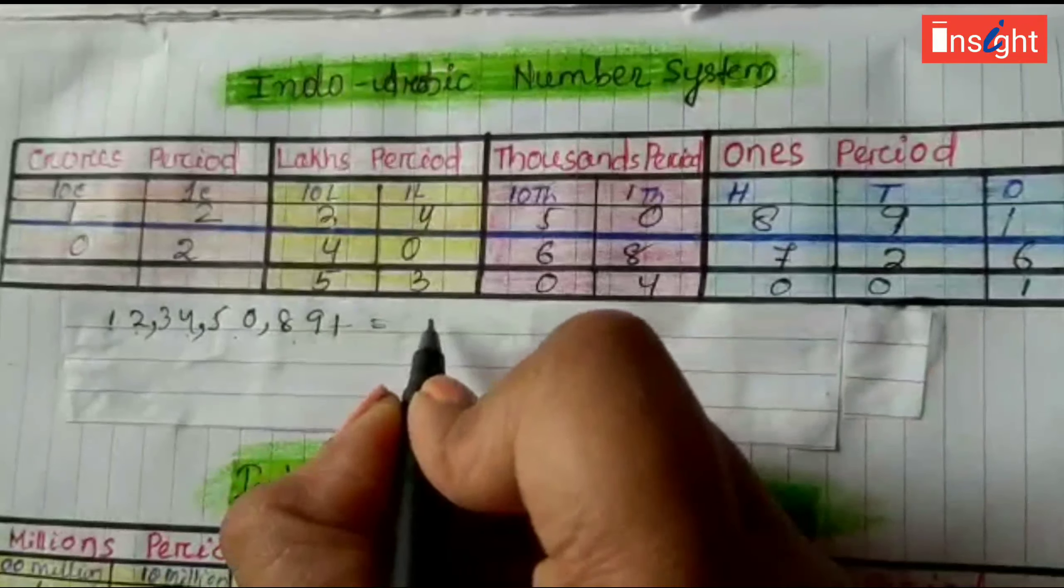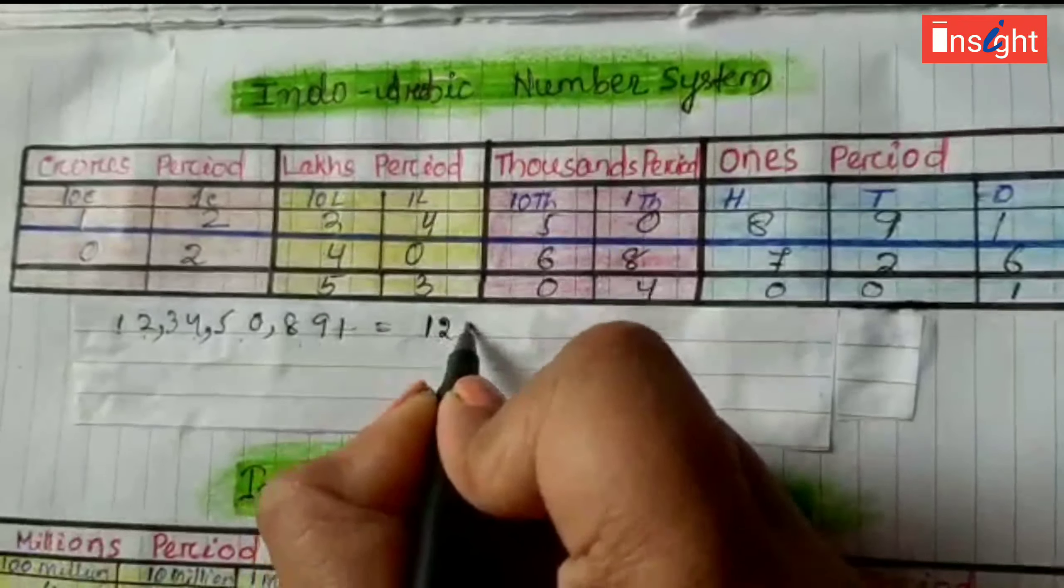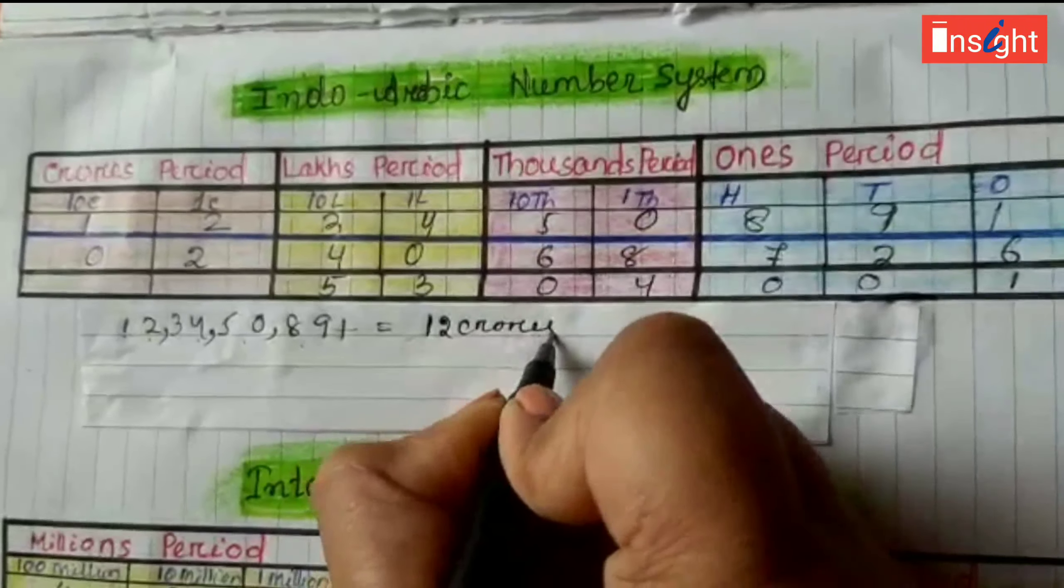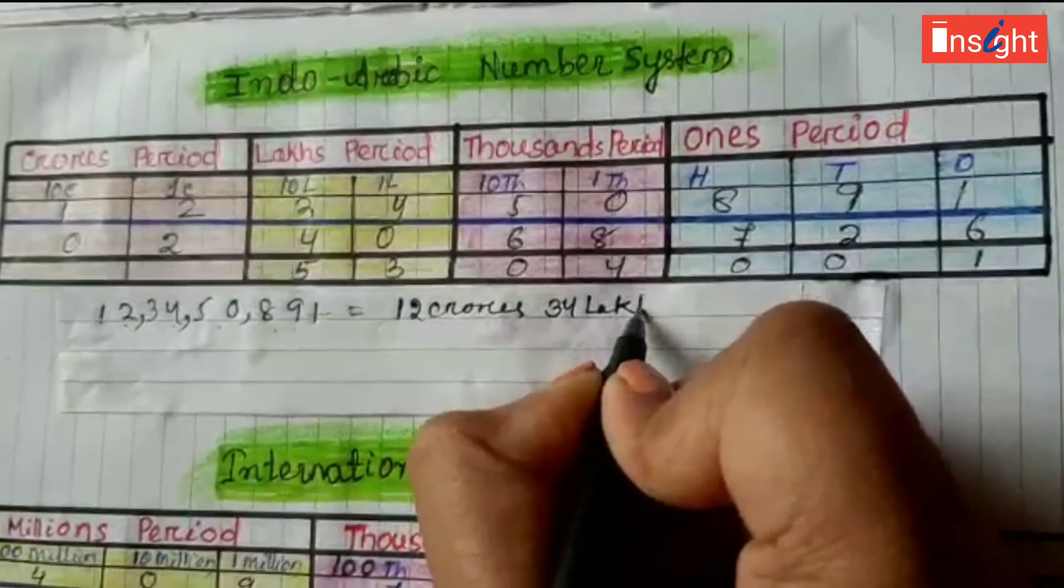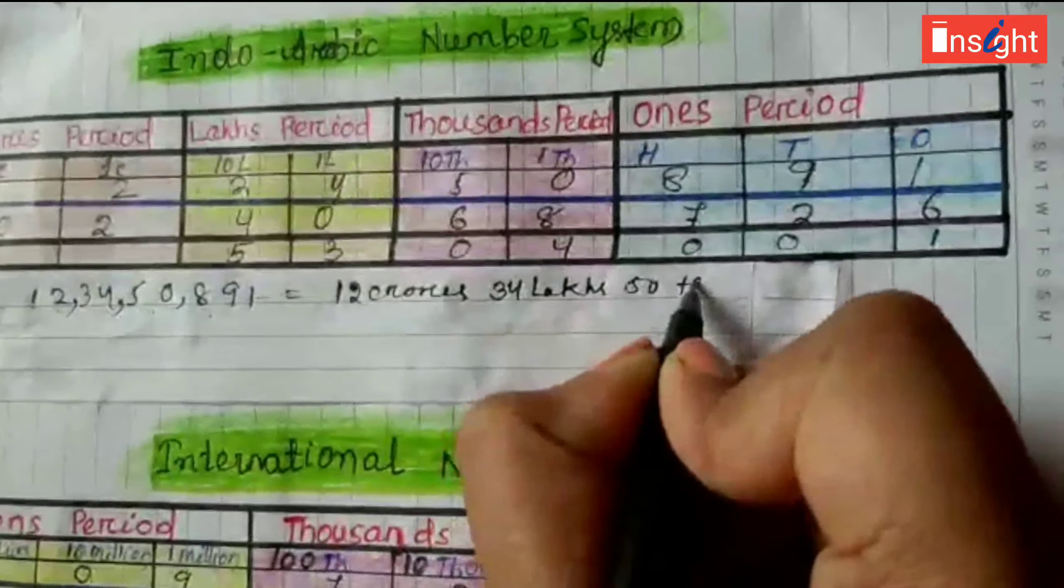So, very clearly you can write: twelve crores, thirty-four lakhs, fifty thousand.